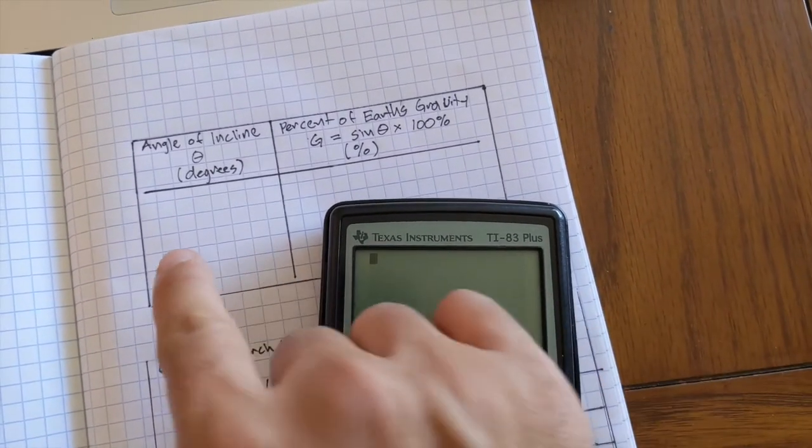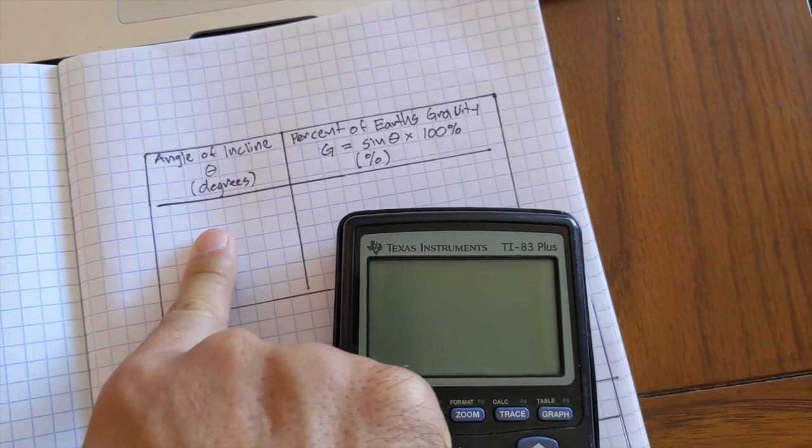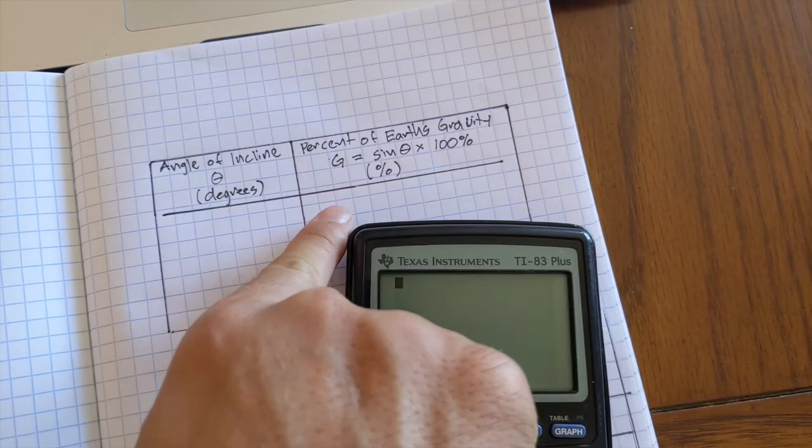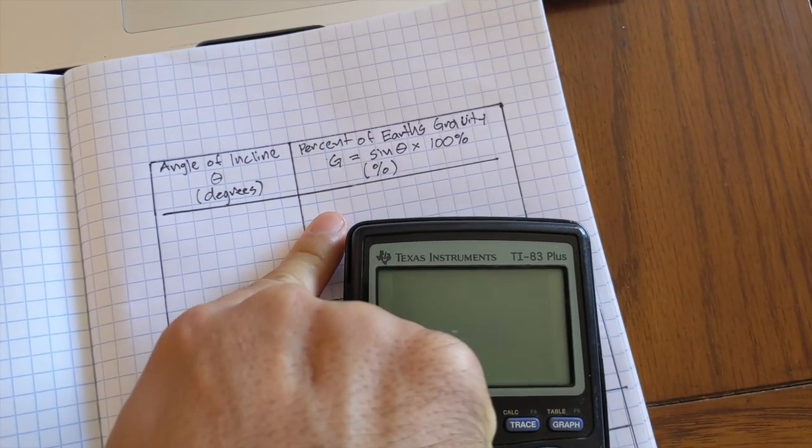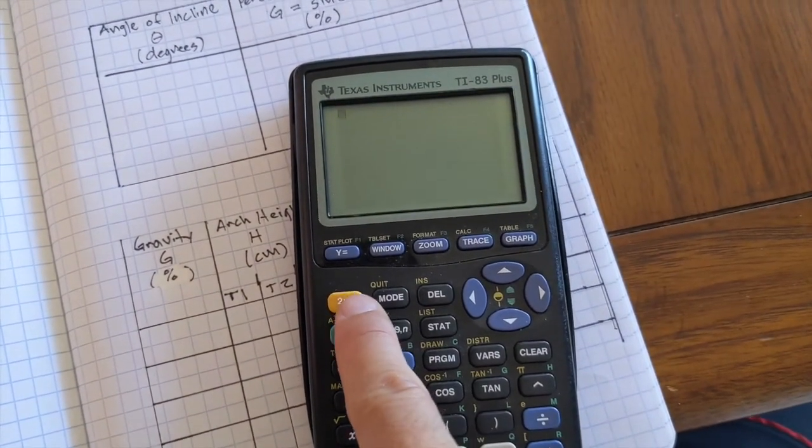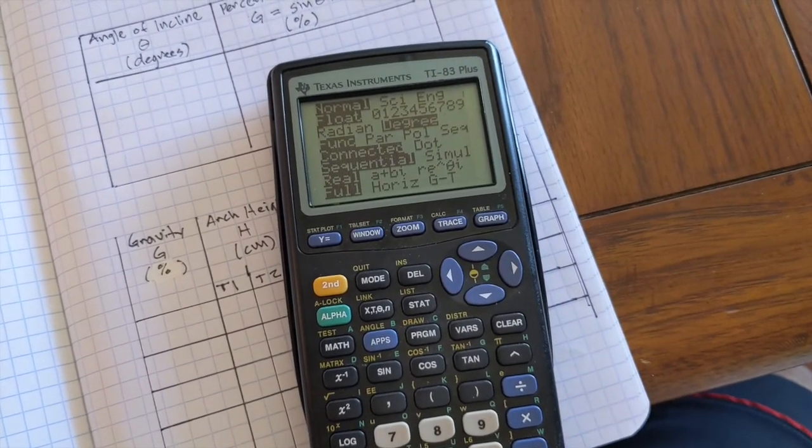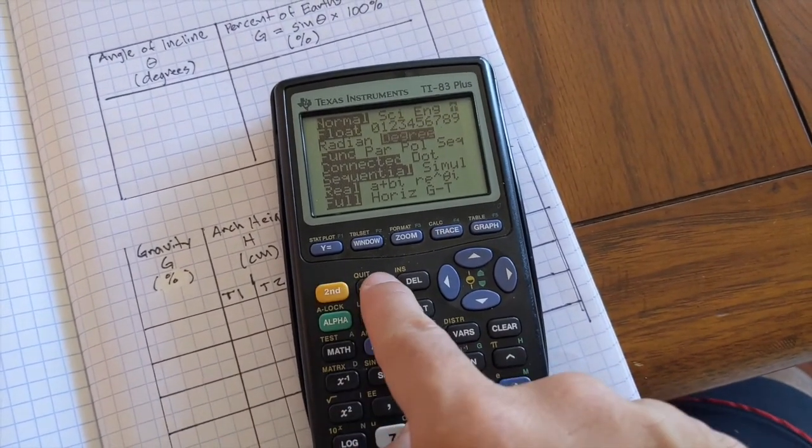Let's go through an example calculation where I have to have a certain angle that I put my baking pan and it's going to represent a certain percentage of Earth's gravity. So here's how you do it. First, you make sure you go to mode and you are in the degree mode. Press enter and then second mode to quit.